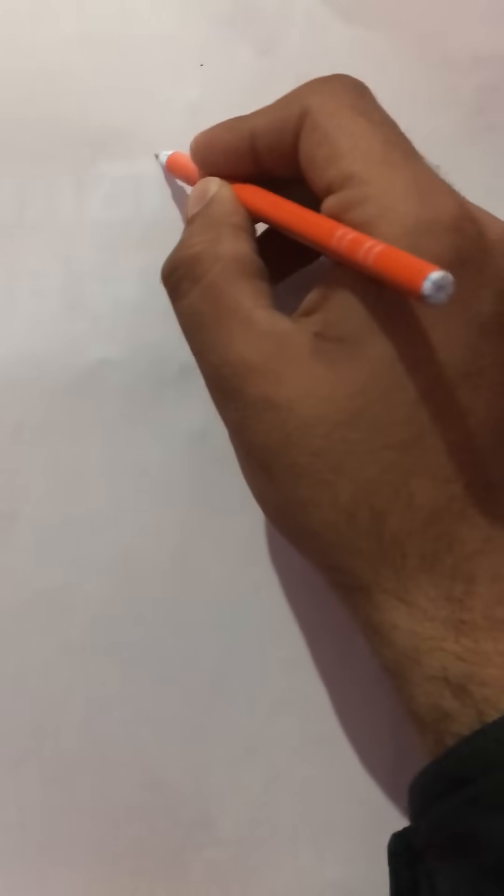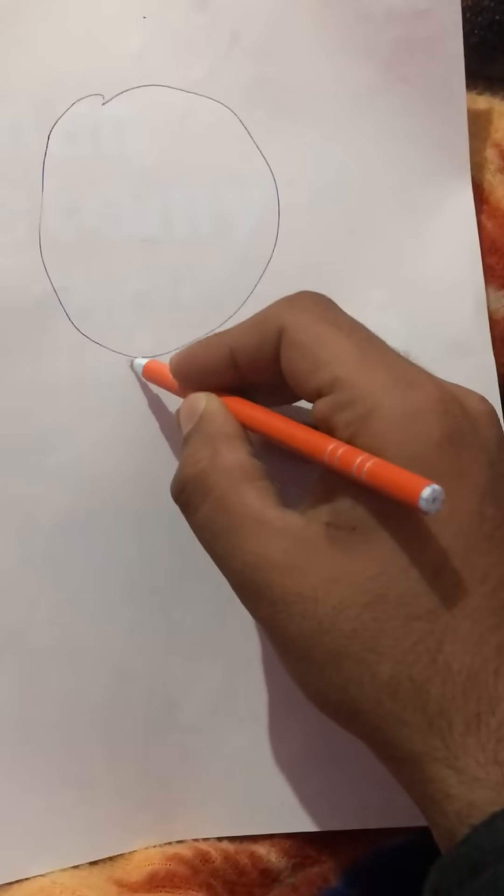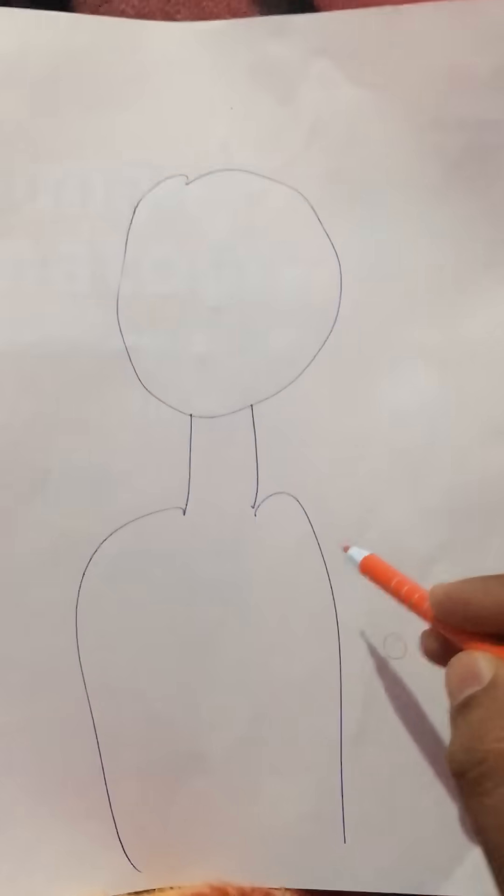We will draw the basic structure of the human body. I am drawing a rough sketch of a human. See, it is a face, and this is the neck. This is the rest of the body. It's a very rough sketch just to give you an idea.